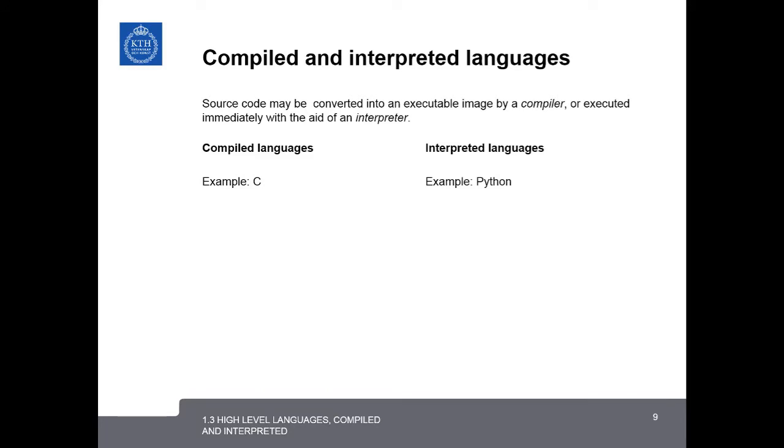So to summarize, the source code may be converted into an executable image by a compiler, or executed immediately with the aid of an interpreter. C is an example of a compiled language, while Python is an interpreted language.